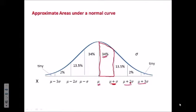The area between one standard deviation and two standard deviations above the mean is 13.5%. Between two and three standard deviations, about 2%.